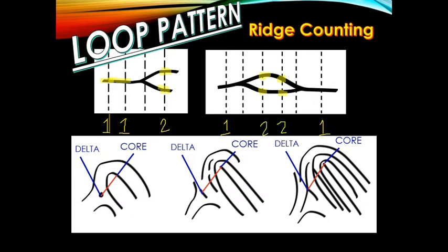The question is: what if we encounter a particular part wherein there is a meeting or convergence of two ridges? Even here, we have the converging or meeting of two ridges. Under the rules, these are considered two ridges. So if the imaginary line drawn from the delta to the core touches the meeting or converging part of the ridges, then the ridge count must be two.